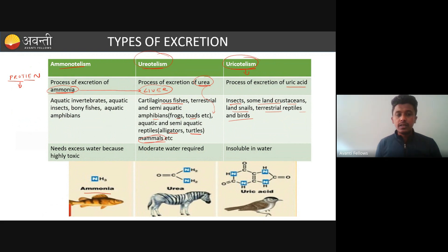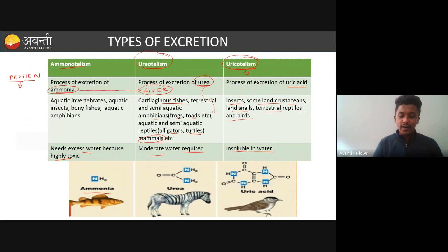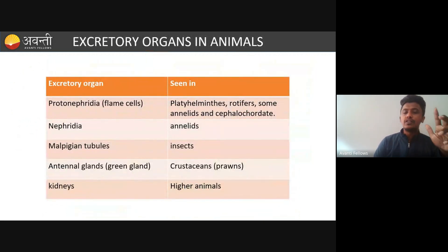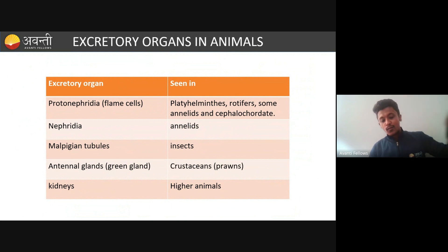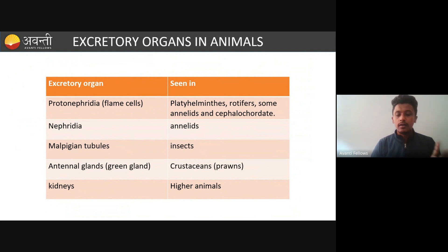The difference between these organisms: ammonotelic organisms need excessive water and the waste is highly toxic. Ureotelic organisms require a moderate amount of water. Uricotelic organisms produce uric acid that becomes insoluble in water — that is why when a bird drops waste on a car, it is very hard to wash off. It becomes oily, sticky, and greasy because uric acid is insoluble in water.